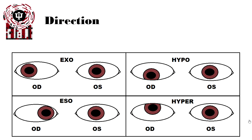We can also have vertical deviations. Starting in the upper right-hand corner, we have what's called a hypo-deviation — that means when one eye is turned down relative to the other. We can also have an eye turned up, which is referred to as a hyper-deviation, which we can see in the lower right-hand corner, where the right eye is turned up relative to the fixating eye.